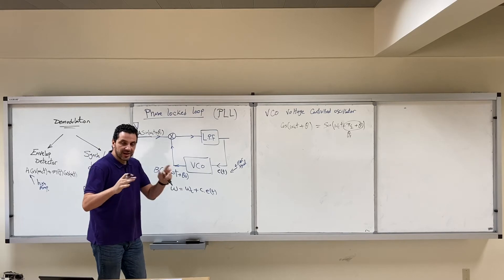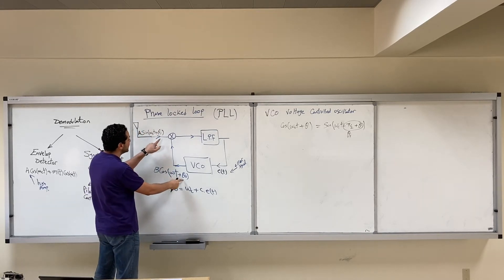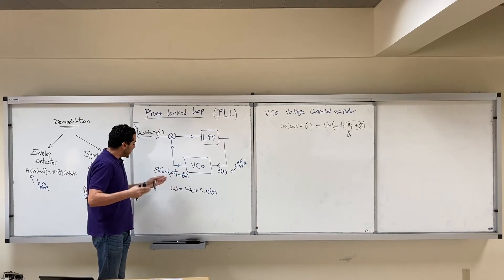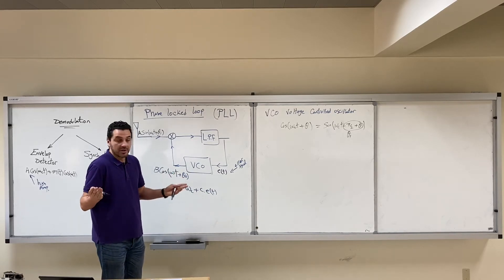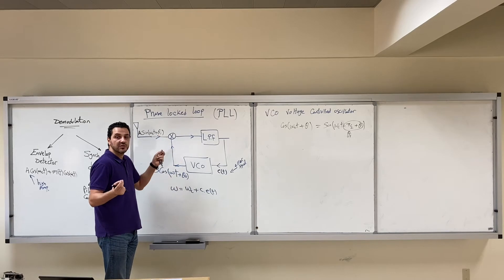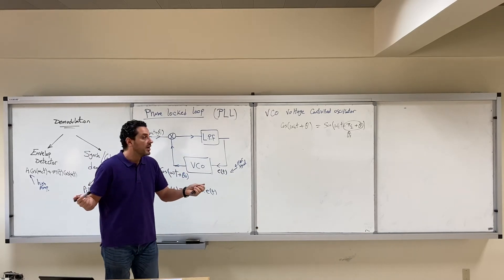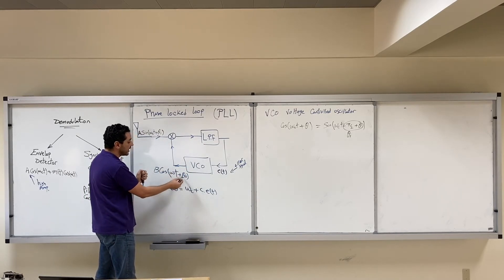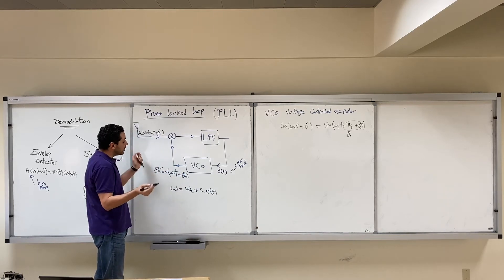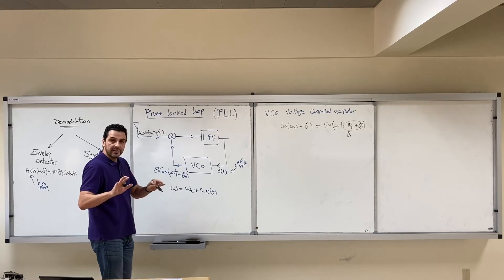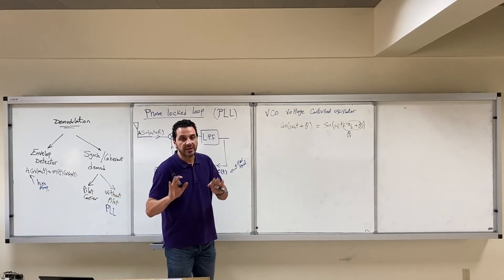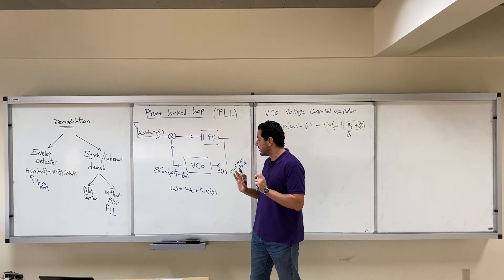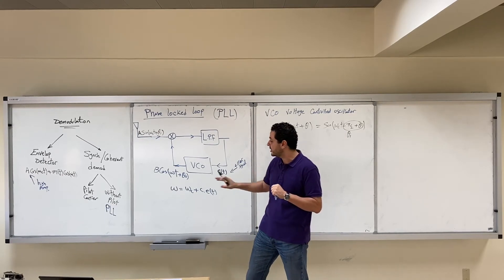We assume we need synchronization between two phases. We receive a random phase θᵢ that we don't know. The VCO is generating a cosine with another phase θ₀, because the VCO doesn't know the phase of the received signal — θᵢ is usually random. So the VCO generates a sinusoidal wave with θ₀, which is different from θᵢ. Our purpose is for θ₀ to follow and lock onto θᵢ — this is phase synchronization.